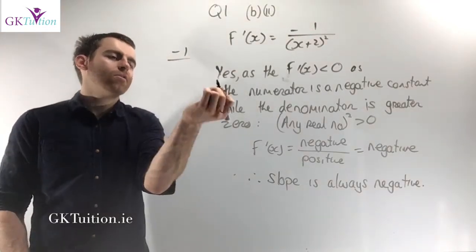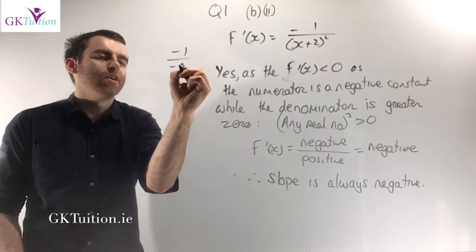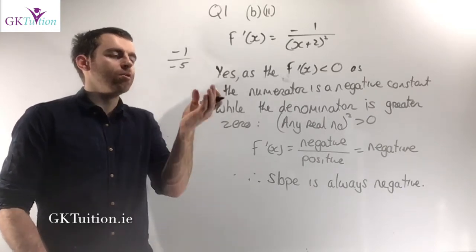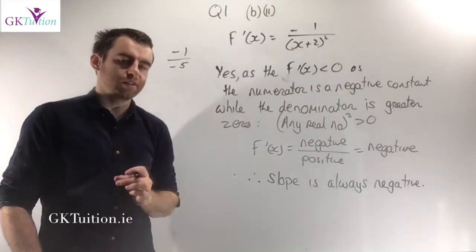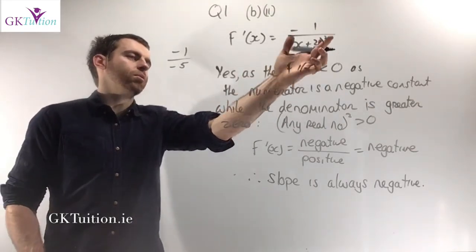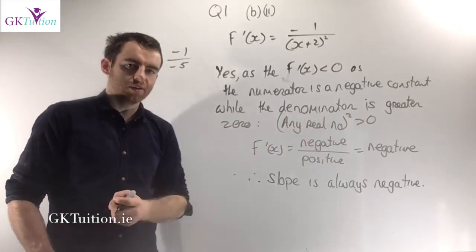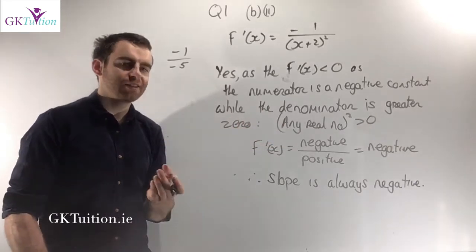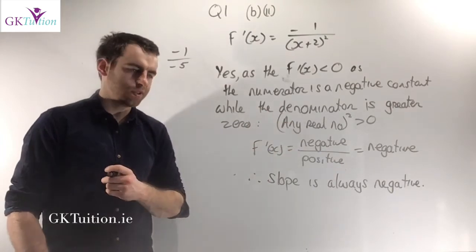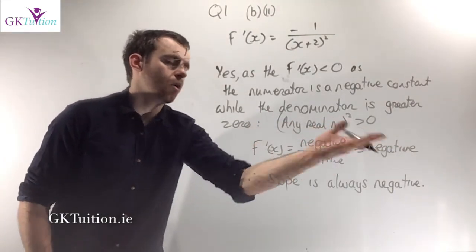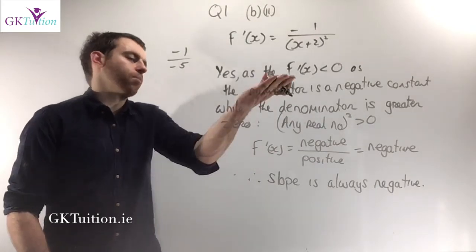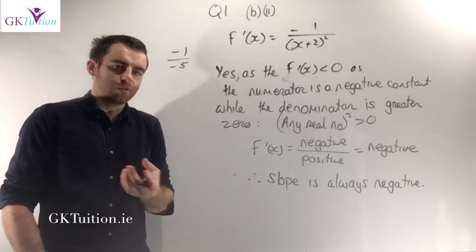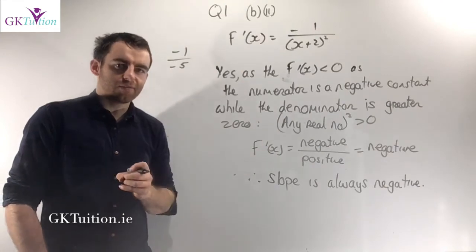Just because the top is negative doesn't mean the whole fraction is negative — for example, minus 1 divided by minus 5 is plus one fifth. You also had to state that the denominator x plus 2 squared is greater than 0 because any real number squared is greater than 0. A negative divided by a positive always gives a negative value, proving f dash x is always less than 0, the slope is always negative, and the function is always decreasing. That's the last five marks in this question.